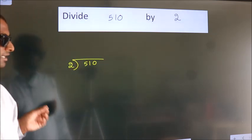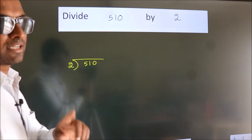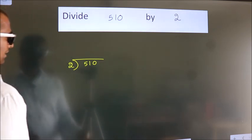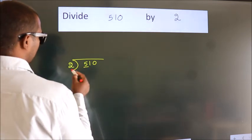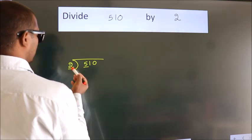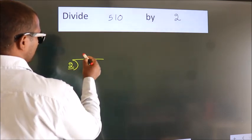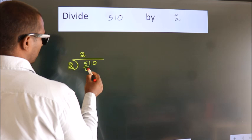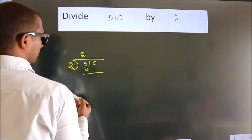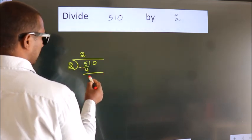This is your step 1. Next, here we have 5. Here 2. A number close to 5 in the 2 table is 2 times 2, which is 4. Now we should subtract. We get 1.